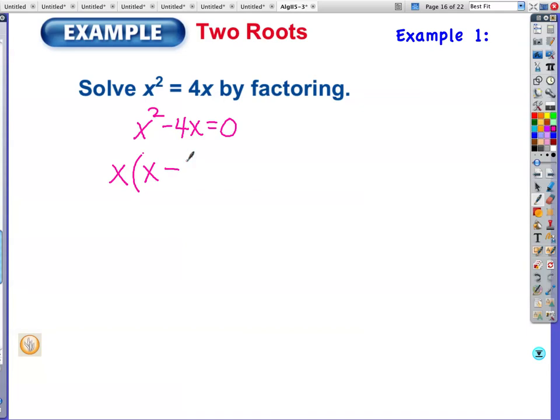x times what gives you x squared? x. x times what gives you negative 4x? negative 4. It's still equal to zero, so that means either this part has to equal zero or this equals zero. Either x equals zero or x minus 4 equals zero, so x equals 4. This basically means your parabola would have an x intercept of zero and the other x intercept at 4.